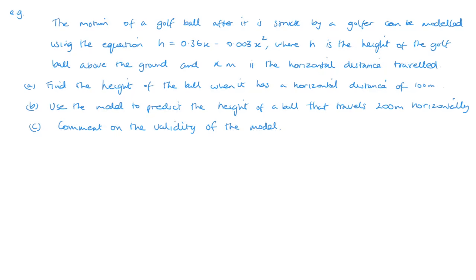This model is the motion of a golf ball after it's been hit by a golfer, modeled with h equals 0.36x minus 0.003x squared, where h is the vertical height and x is the horizontal distance. First part: find the height of the ball when there's a horizontal distance of 100 meters.